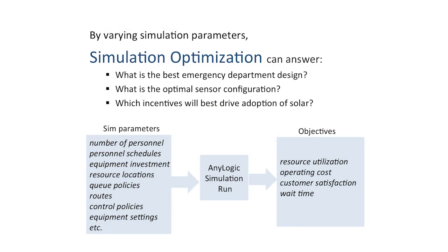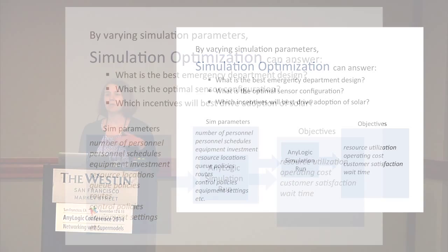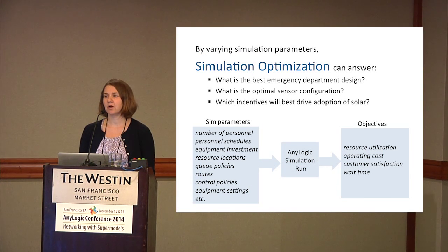Questions such as: what is the best emergency department design? What incentives should I promote in order to best drive solar adoption? These kinds of questions are inherently optimization questions, and you can still answer them with simulation. What we do typically is vary input parameters that you might select, run the simulation over and over in an automated way, and drive the search towards your selected objectives.